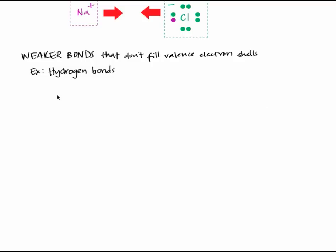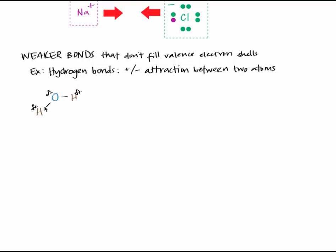One major example is the hydrogen bond. Hydrogen bonds are plus-minus interactions between two atoms, commonly seen between two different water molecules. In one water molecule, there is a partially positive hydrogen atom, which is partially positive because of a polar covalent bond to a more electronegative oxygen atom. The partially positive hydrogen is attracted to the partially negative oxygen from a neighboring water molecule. This plus-minus attraction is an example of a hydrogen bond. Hydrogen bonds aren't only between hydrogen and oxygen — they're seen between a partially positive hydrogen and a variety of partially negative atoms.